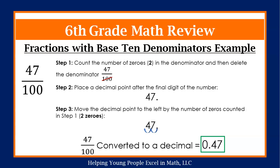Step three, we are going to move the decimal point to the left by the number of zeros we counted in step one. Remember, we counted two zeros. So that is the number of times we are going to move our decimal point to the left. We move it one time. The decimal point is between the four and the seven. We move it one more time to the left. The decimal point is right in front of the four. So our fraction 47 over 100 converted to a decimal is 0.47.